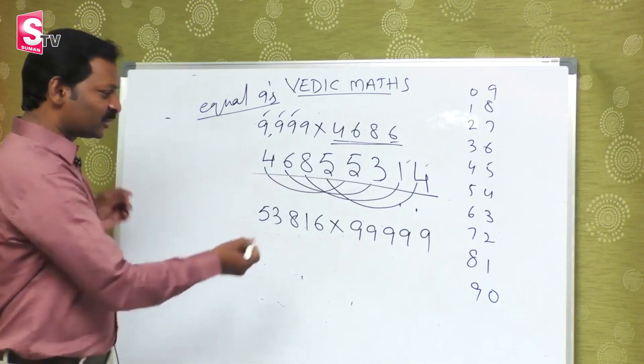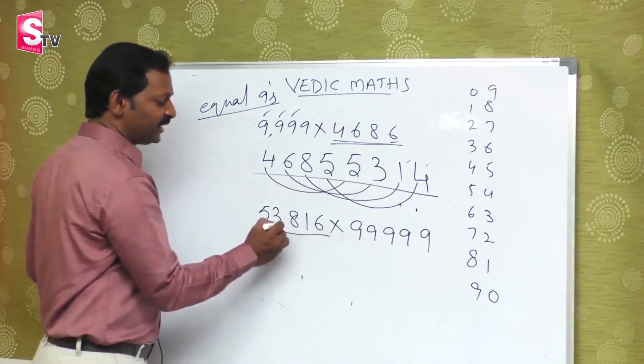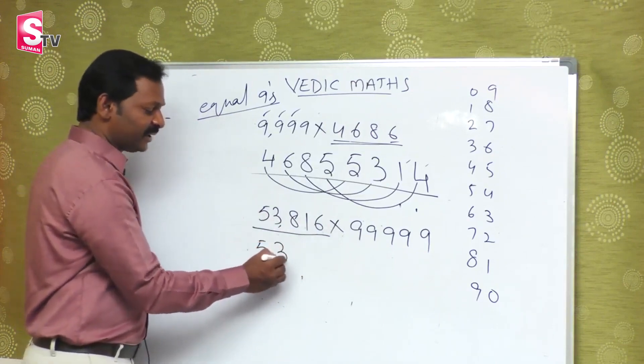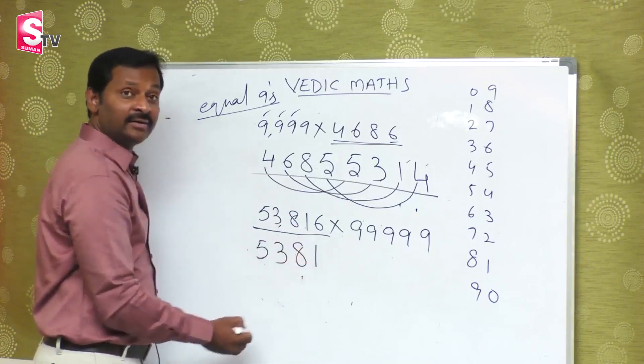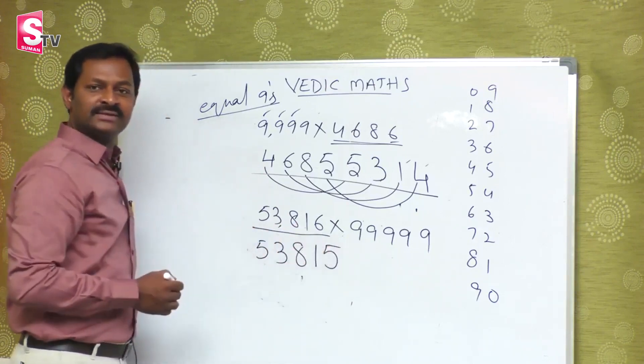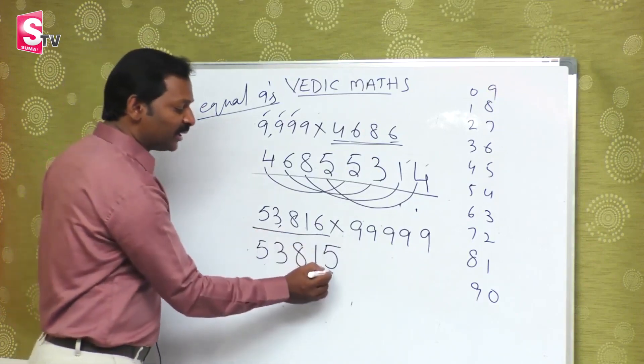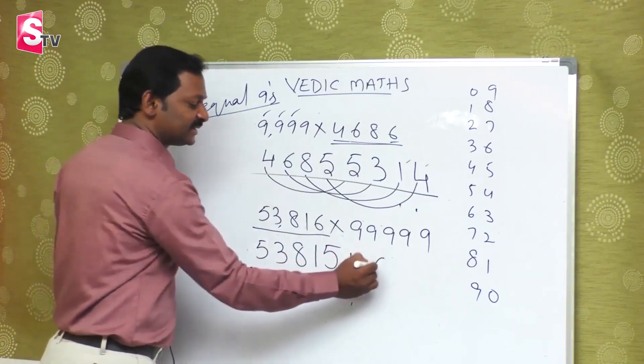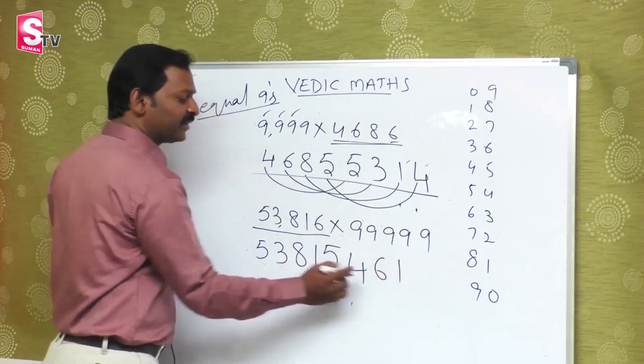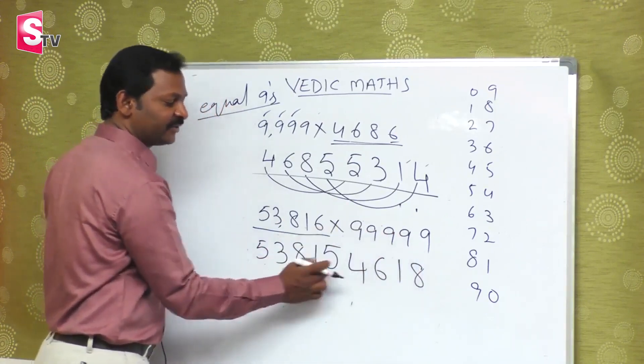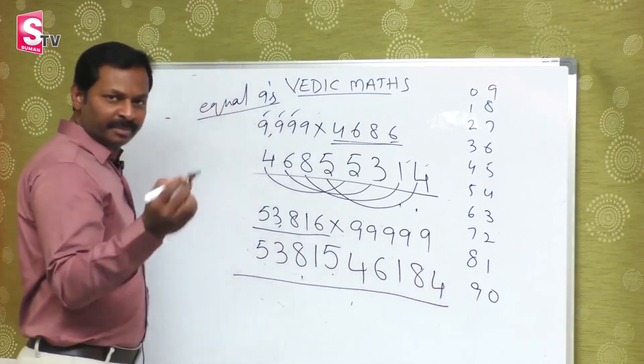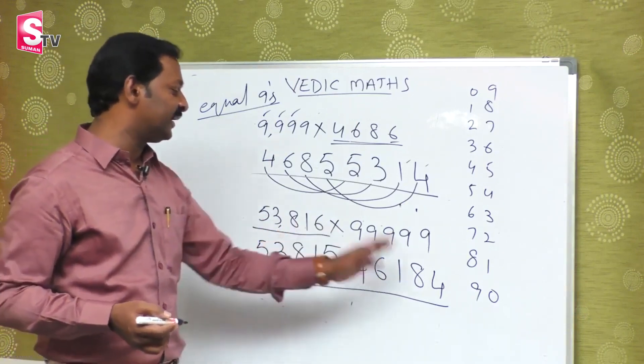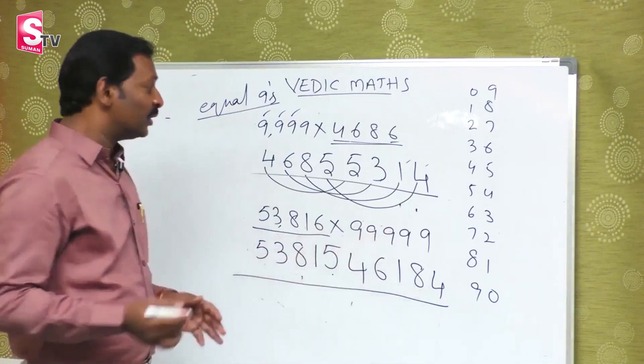Now tell me this answer: 53,816 is the number given. So first write 5, 3, 8, 1, 5. This is the first part of the answer. So you won't be confused - write 5's friend is 4, 3's friend is 6, 8's friend is 1, 1's friend is 8, and last 5's friend is 4. Friend means what? Two numbers that add to 9.